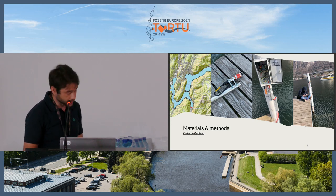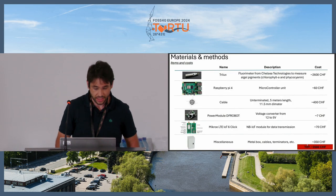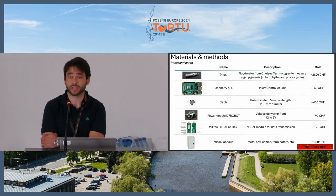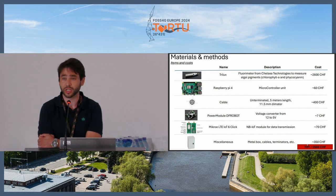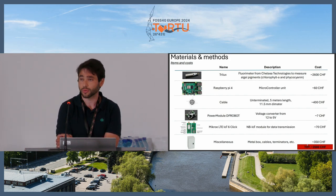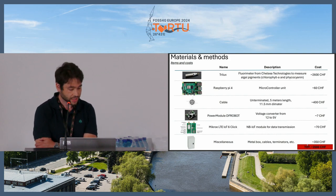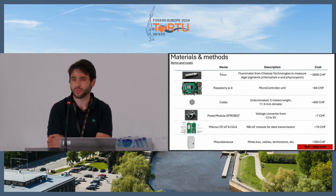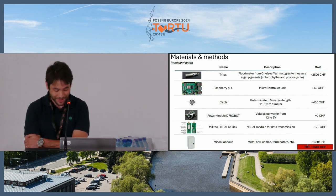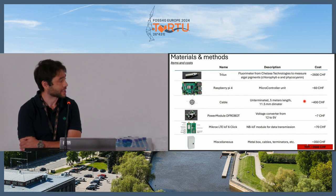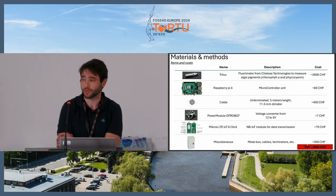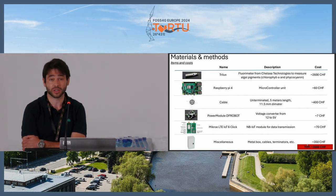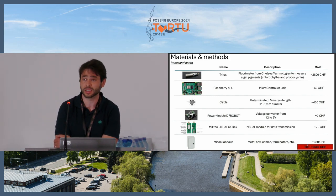How is the system built? Basically it's composed of these elements. First of all, a 3-lux sensor from Chelsea Technologies to measure algal pigments — it is a fluorimeter with a cost of around 2,600 francs. Then there is a microcontroller unit — we use the Raspberry Pi, which pre-COVID cost around 40 francs, but now I think it's 60–70. Then there is the cable, which is quite expensive at 400 francs for a 5-meter cable, because it should be water-resistant and weather-resistant since the system is working in a harsh environment.